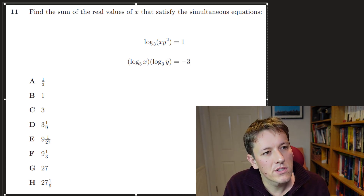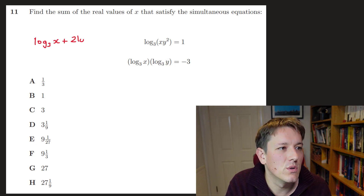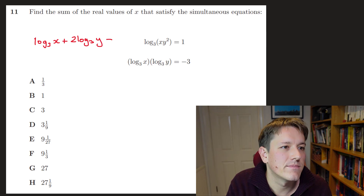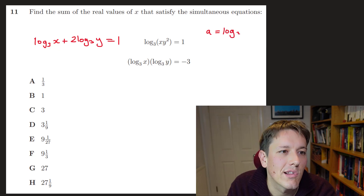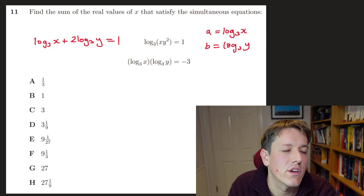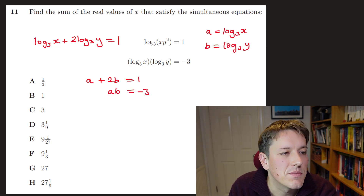Using the rules of logarithms on the first equation, we'd have log₃(x) plus 2·log₃(y) equals 1. I want to write a = log₃(x) and b = log₃(y), so the first equation becomes a + 2b = 1 and the second one becomes a·b = −3.